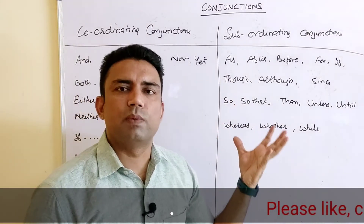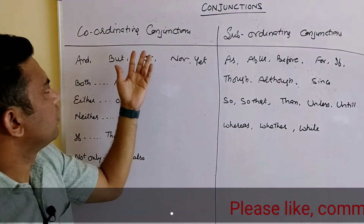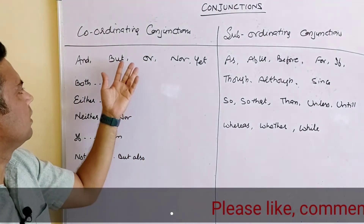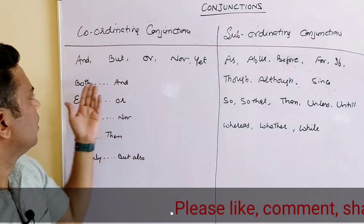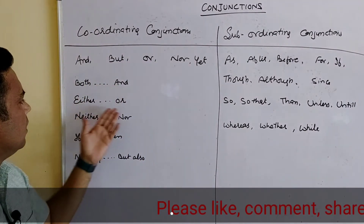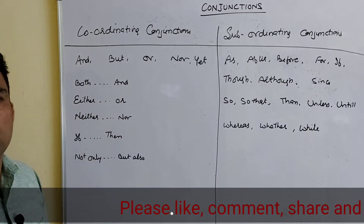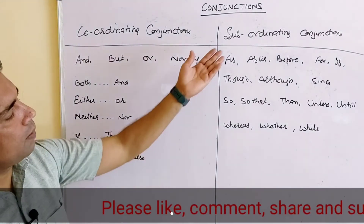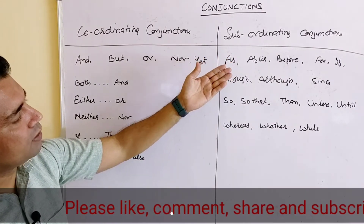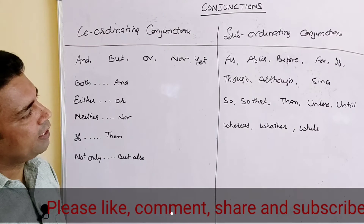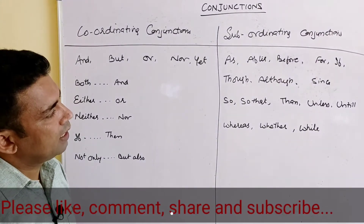Taking the coordinating conjunctions first, they are: and, but, or, nor, yet, both...and, either...or, neither...nor, if...then, and not only...but also. For subordinating conjunctions, we have: as, after, before, for, if, though, although, since, so, so that, then, unless, until, whereas, whether, and while.